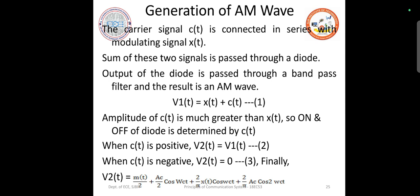Hence we can write V2(t) as m(t)/2 plus (ac/2)cos(ωct) plus (2/π)x(t)cos(ωct) plus (2/π)ac cos(2ωct).